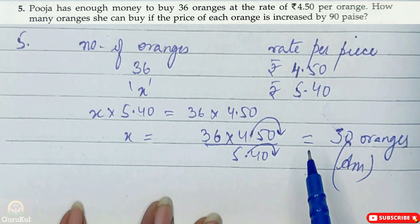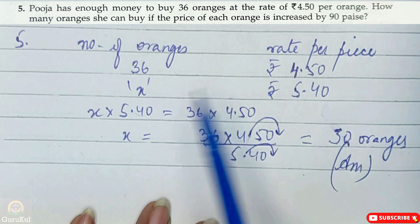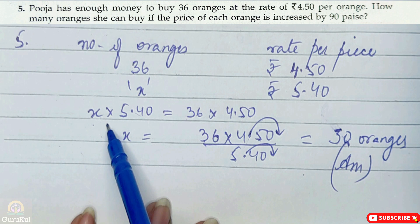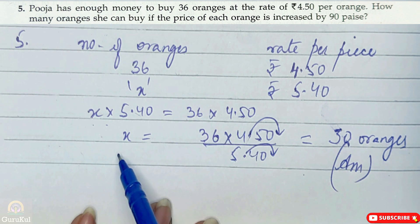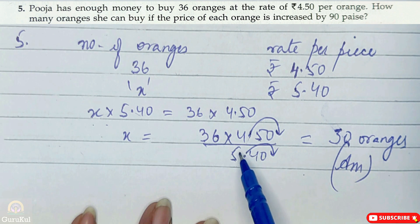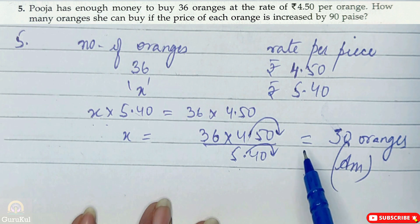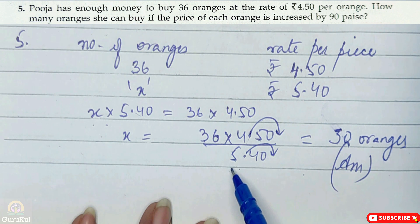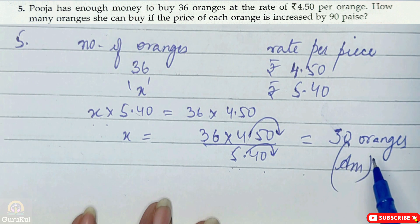So after the increase in price by 90 paise, how many oranges can Pooja now buy? We solve it and get the answer: 30 oranges. So Pooja can now buy 30 oranges after the increase in the price of oranges by 90 paise.